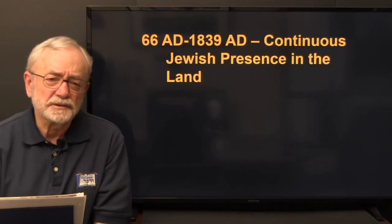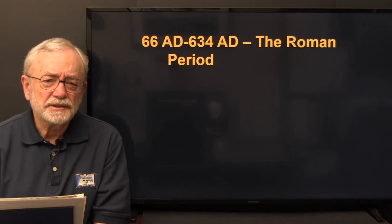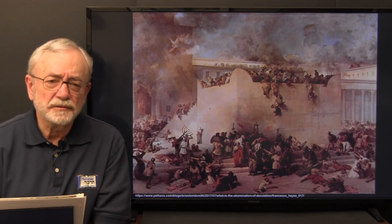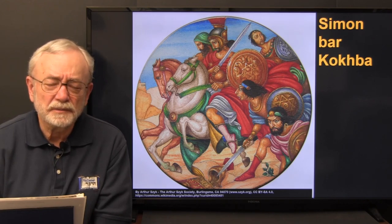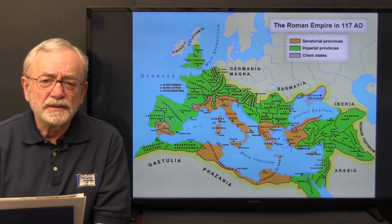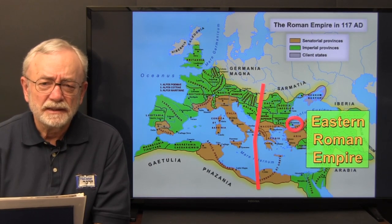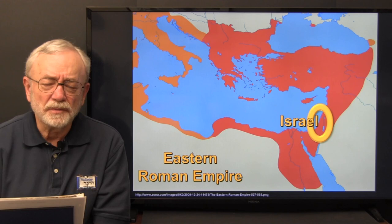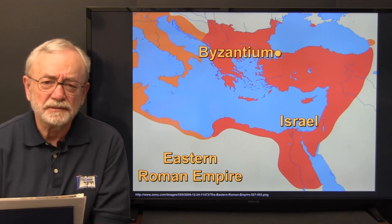We saw that this period was characterized by a continuous Jewish presence in the land. From 66 AD to 634 AD was the Roman period. The temple was destroyed in 70 AD during the first Jewish revolt, and again in 135 AD under the Bar Kochba revolt, after which the Jewish people were scattered all over the world. The Roman Empire broke into the Eastern and Western Roman Empires, with Israel as a small province in the Eastern Roman Empire, whose capital was Byzantium.